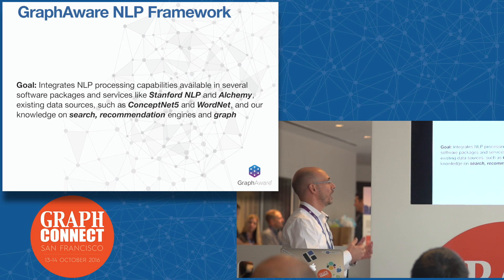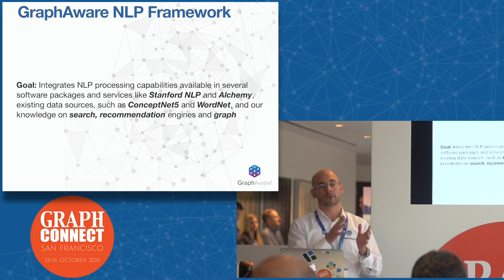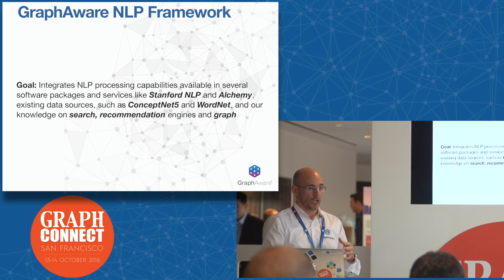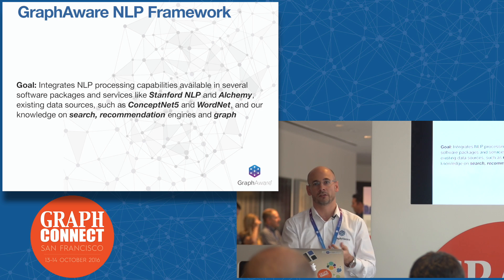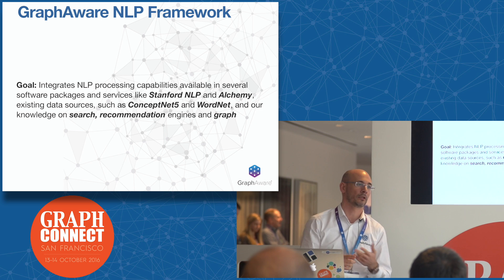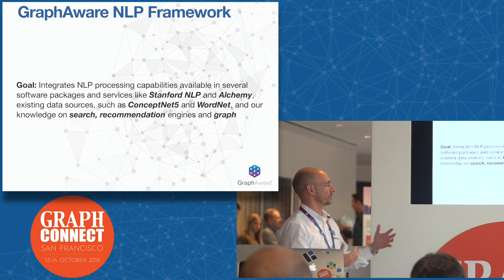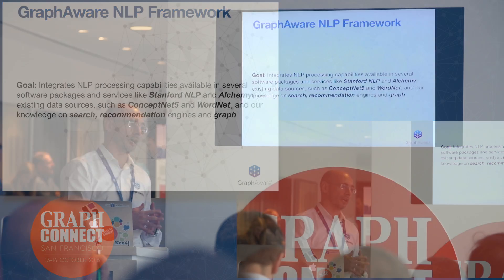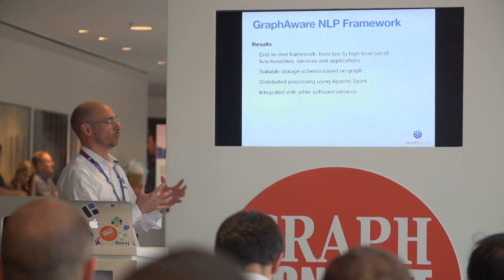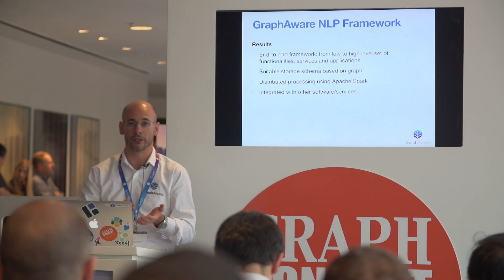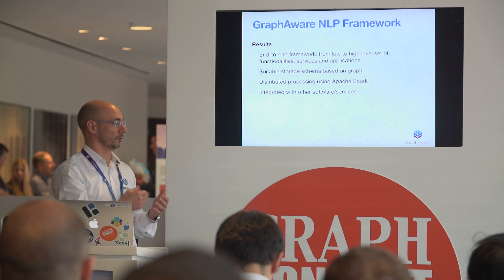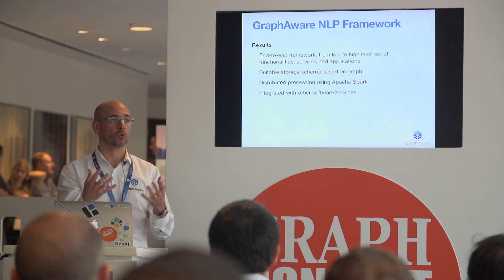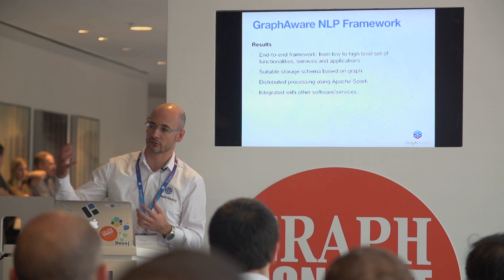With this idea in mind, we started creating a new project called the GraphAware NLP framework, with the idea of integrating already existing NLP functionalities available in most common frameworks like Stanford NLP, with existing knowledge sources like ConceptNet 5, Alchemy API, WordNet, and so on — combined with our knowledge about graph, search, and recommendation — to create a real end-to-end framework offering from low to high-level sets of functionalities, services, or applications that use the graph at the center of this infrastructure to store data and allow people to easily access it.